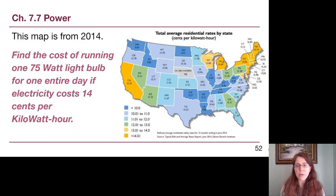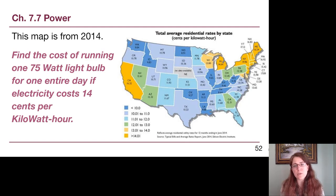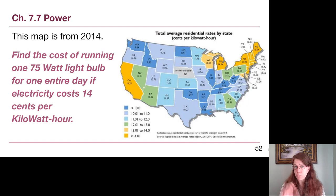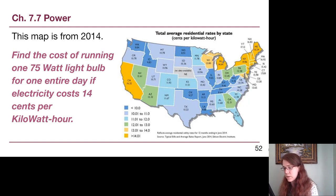A newer map from our textbook shows Michigan has jumped into the highest bracket, with Alaska and Hawaii also being bad. We're going to round to 14 cents per kilowatt-hour. Try on your own: what is the cost of running a 75-watt light bulb for an entire day if electricity costs 14 cents per kilowatt-hour? Pause the video and work through it yourself.